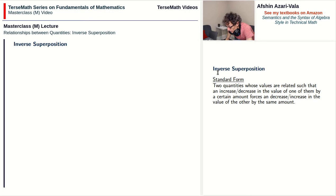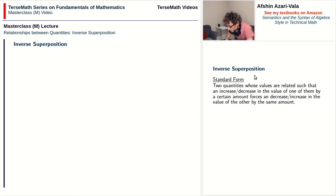In the designation inverse superposition, the word inverse means opposite behaviors — one goes up, the other goes down. Direct means same behavior — they both go up or they both go down. The word superposition means that the changes happen through additions and subtractions.